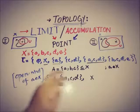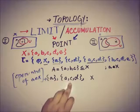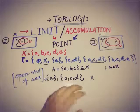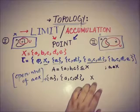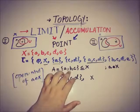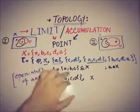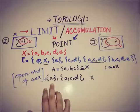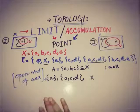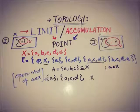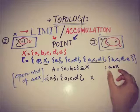We have the open neighborhoods: {a}, {a, c, d}, and X. Now, {a, c, d} intersects with A = {a, b, c} at point 'c', which is a member other than 'a'. And X intersects with A, giving members b and c other than 'a'. However, the neighborhood {a} contains no element other than 'a' itself, so not all open neighborhoods of 'a' intersect with A at a point other than 'a'.